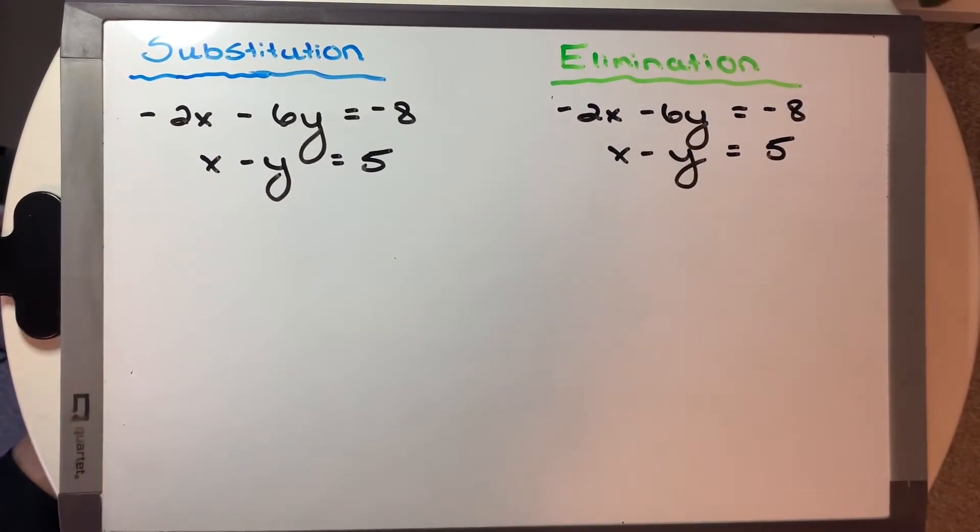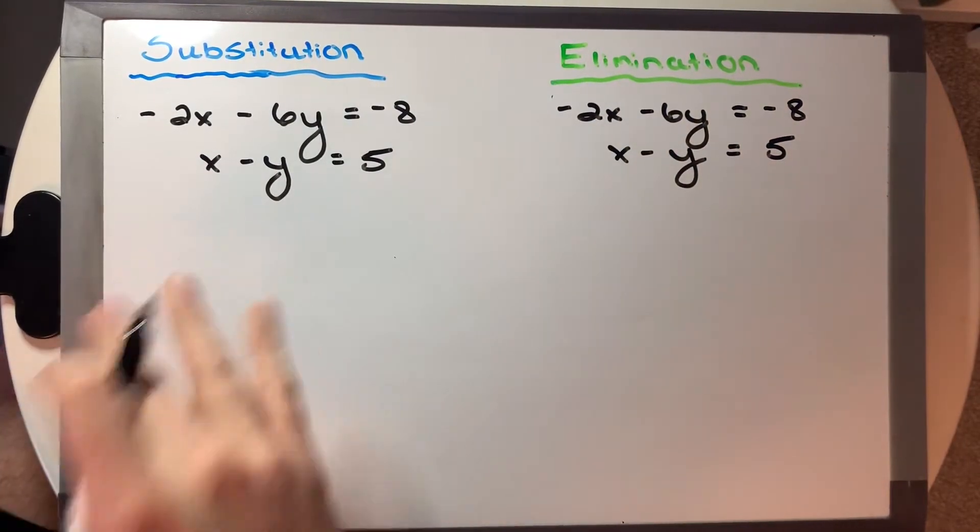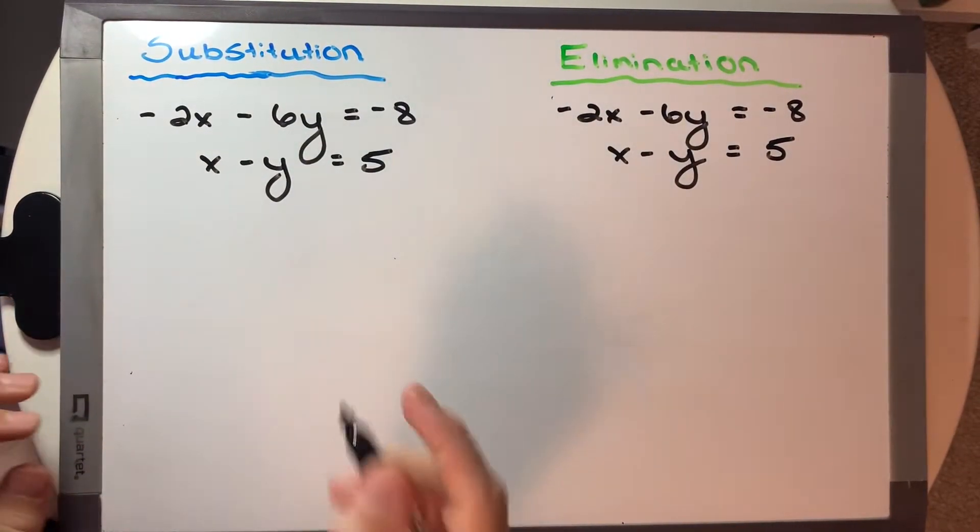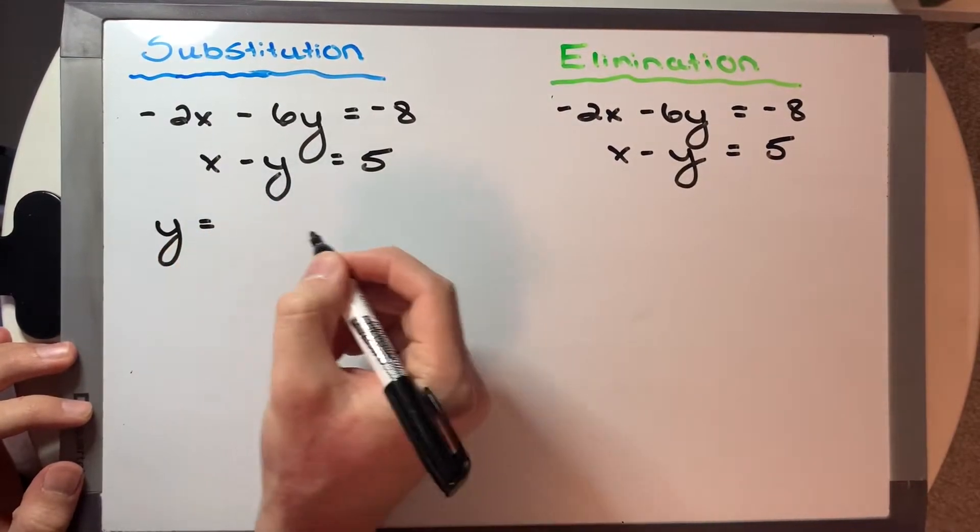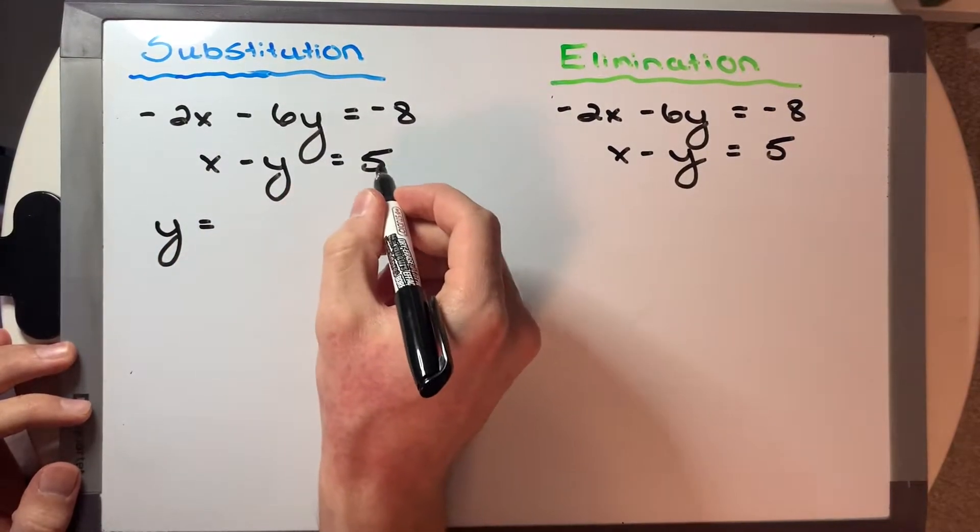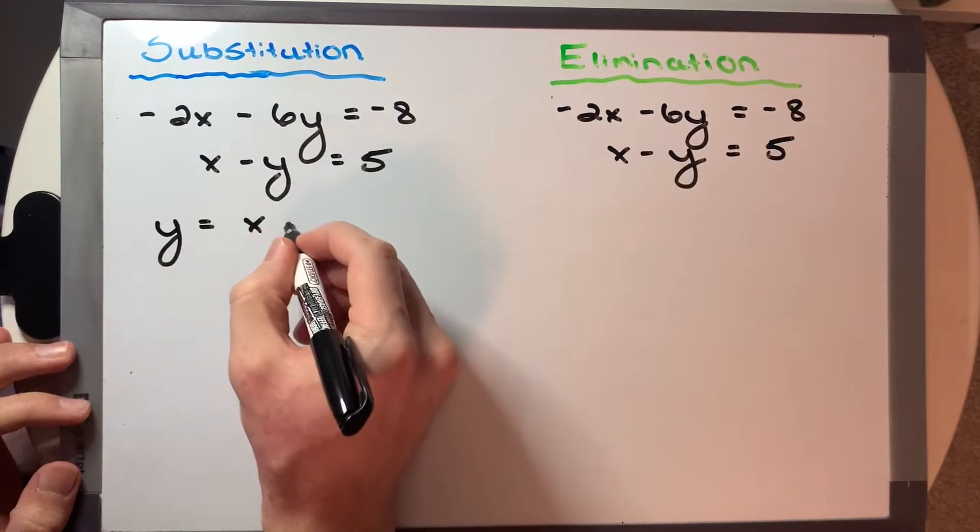Okay, so now we have another example here, and we're going to start again with the substitution. So I'm going to solve for y again in the bottom one here, which says that y is equal to x minus 5, if we move y to the right and then 5 to the left.